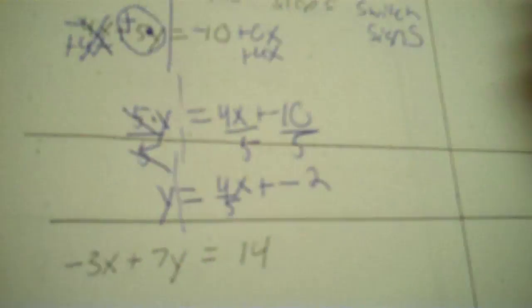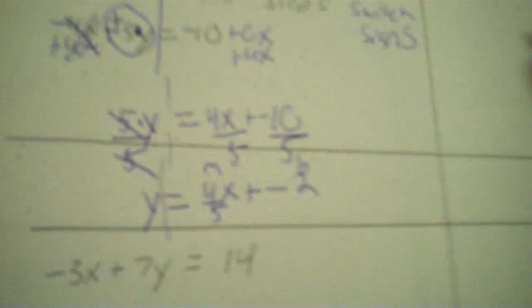Now what I have accomplished is, now that y is by itself, I have my m and my b. So the slope is 4 fifths, and the y-intercept is negative 2. So you would be set to graph that — you're not graphing it, though.